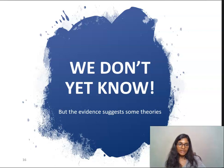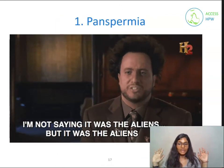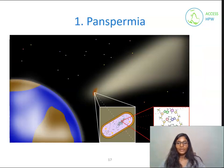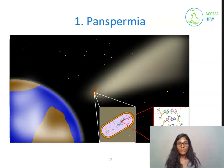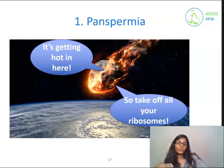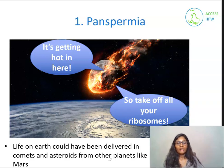The first theory we will be looking at is panspermia. I'm not saying that it was aliens that brought life to Earth, but if panspermia is real, then it was aliens — but I didn't say that. The idea of panspermia is that life from elsewhere in the universe could have been on a comet or a meteorite that crashed into Earth, seeding Earth with life. We believe that life on Earth could have been delivered from planets like Mars.